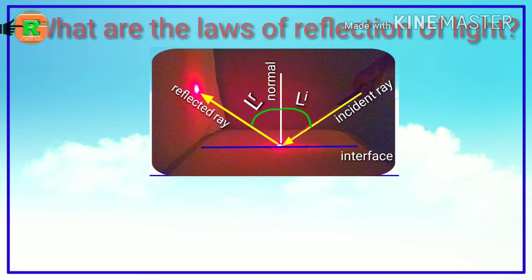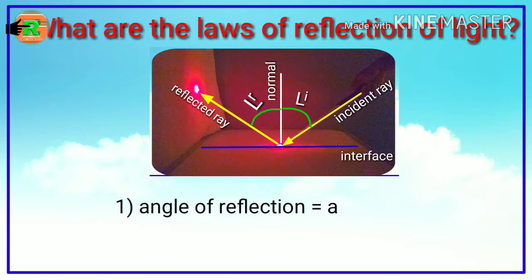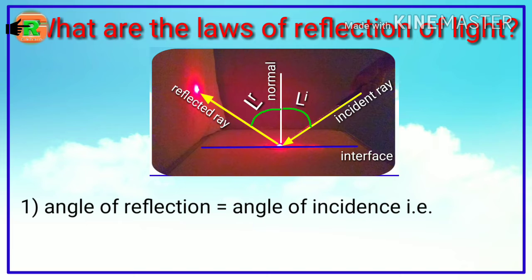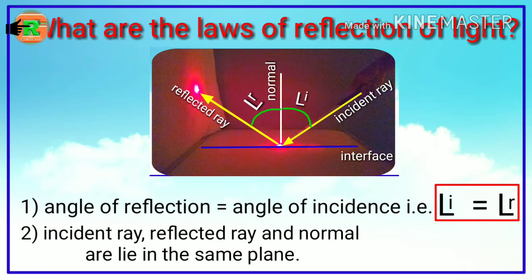And now what are the laws of reflection of light? First one, angle of reflection is equal to angle of incidence. That means angle I is equal to angle R. And the second one, incident ray, reflected ray and normal are lie in the same plane.